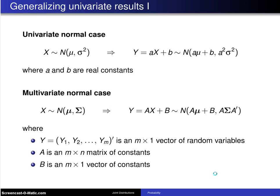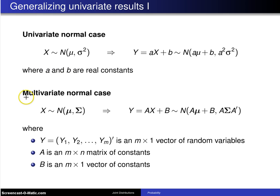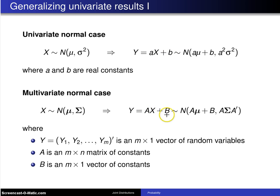Here is one more result. In the univariate case, if x was normally distributed with mean mu and variance sigma squared, then y equals ax plus b was also normally distributed with mean a-mu plus b and variance a squared sigma squared, where a and b are constants. How does that port up into the multivariate normal case? Now we have a random vector x which has the multivariate normal distribution with mean vector mu and variance-covariance matrix sigma. If you then take y equal to ax plus b, which is analogous, but instead of a and b being scalars, they are now a matrix and a vector.